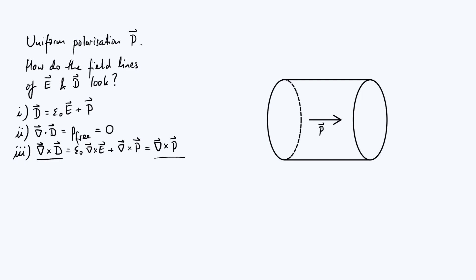The only place where curl P can be non-zero is on the boundary between the electret and the rest of space. You'll run into problems trying to directly calculate curl P because P changes discontinuously at the boundary — going from a non-zero value immediately to zero, making its derivatives formally undefined. For a more realistic numerical model you'd smooth that transition, but we can still do this qualitatively using the discontinuous model.